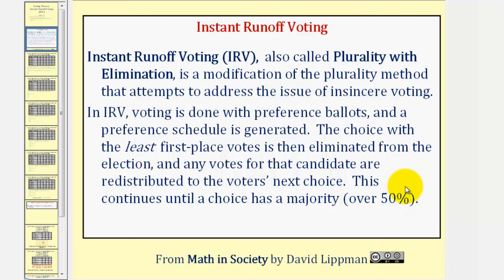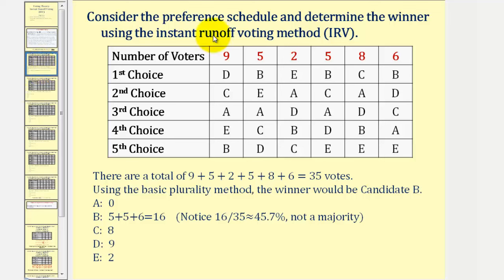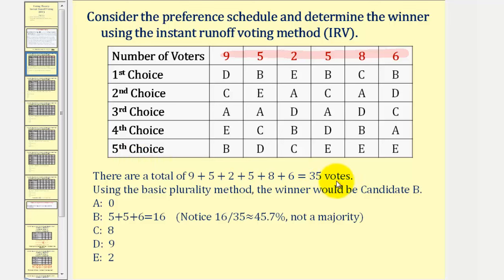Let's take a look at a more detailed example. Here we have a preference schedule and we want to determine the winner using instant runoff voting, or IRV. Notice the sum of the top row shows there are a total of 35 votes, and therefore for a majority, a candidate must have at least 18 votes.